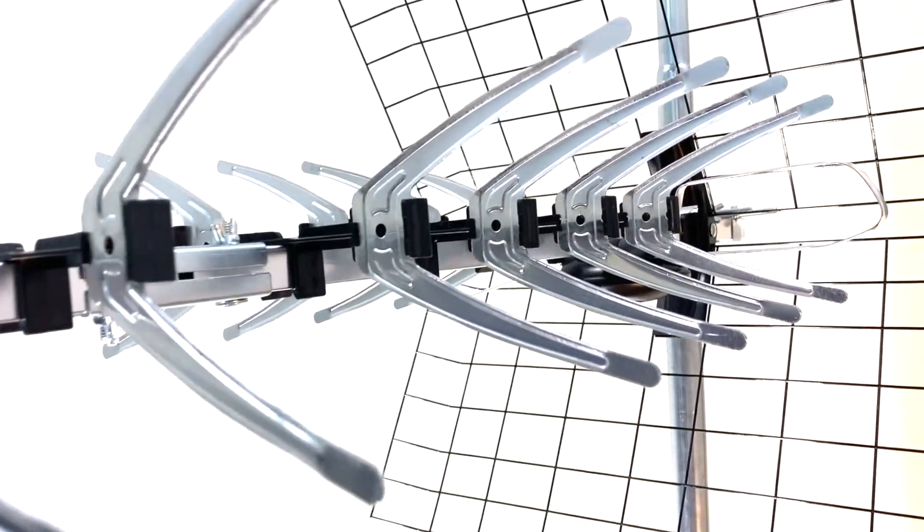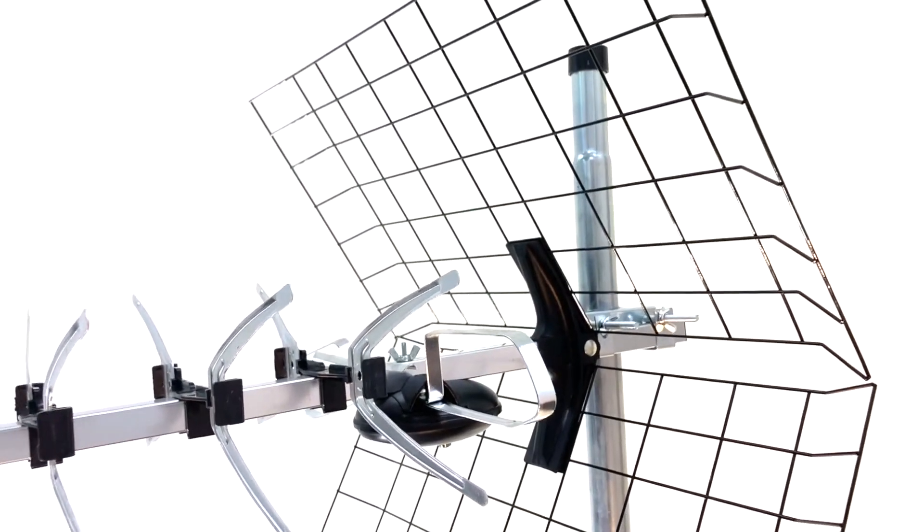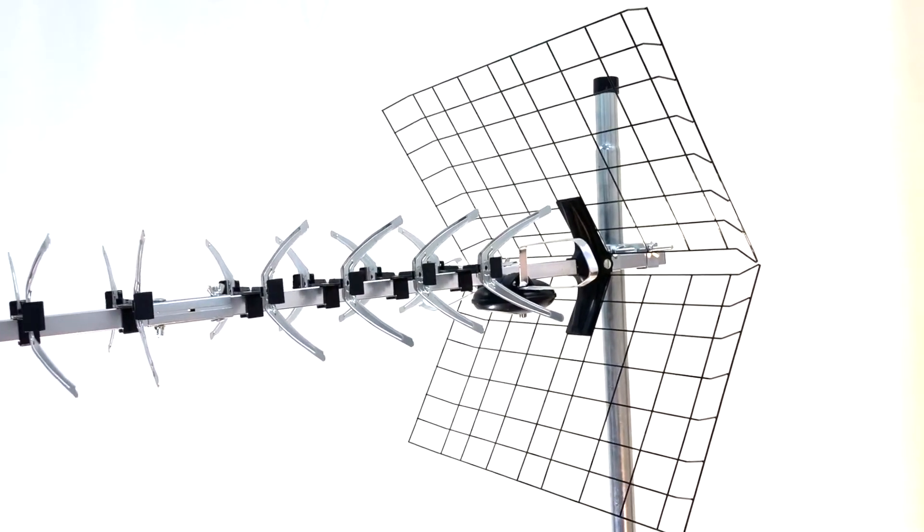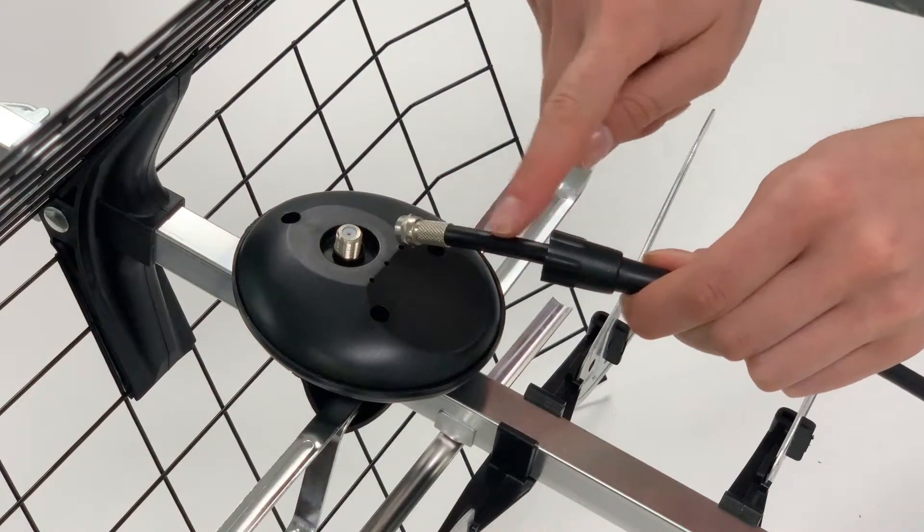When planning your installation, neighboring antennas give a good indication of the mounting height, direction, size and polarization for your location. To cable the antenna you will need this weatherproof boot and a coaxial cable.